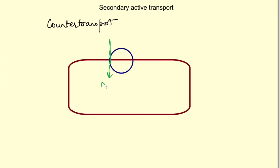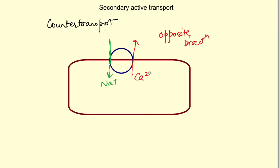In counter transport, one substance moves from outside to inside while the other moves from inside to outside — so they move in opposite directions. An example is the sodium-calcium exchanger, which causes movement of sodium from outside to inside while calcium moves from inside to outside against its concentration gradient.